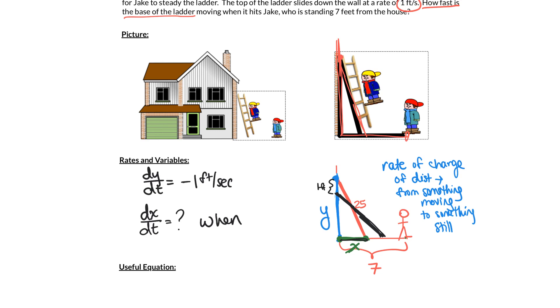As the ladder falls, the bottom of the ladder might be going at different speeds. So we have to ask ourselves when. When are we trying to find dx/dt? And what we care about is when the ladder hits Jake. So I'm going to draw one more ladder into this picture here. This ladder right here, when the bottom of the ladder hits Jake, which is going to be when x is equal to 7, and that's when we want to know dx/dt.